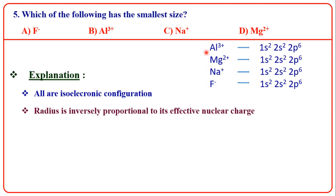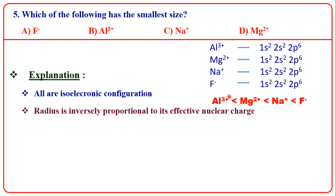As nuclear charge decreases, size increases. Out of Al³⁺, Mg²⁺, Na⁺, and F⁻, Al³⁺ has the highest nuclear charge, so it has the smallest size. The answer is B.